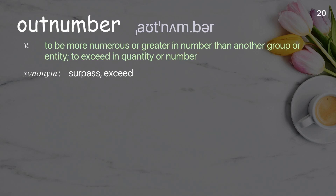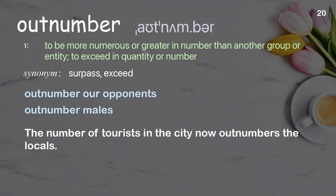Outnumber. To be more numerous or greater in number than another group or entity, to exceed in quantity or number. Examples: outnumber our opponents, outnumber males. The number of tourists in the city now outnumbers the locals.